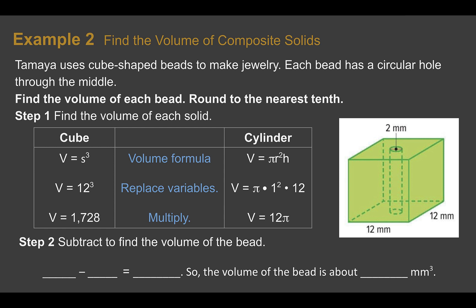Example 2, find the volume of composite solids. Tamaya uses cube-shaped beads to make jewelry. Each bead has a circular hole through the middle. Find the volume of each bead, round to the nearest tenth. So first, again, we need to find the volume of each solid.